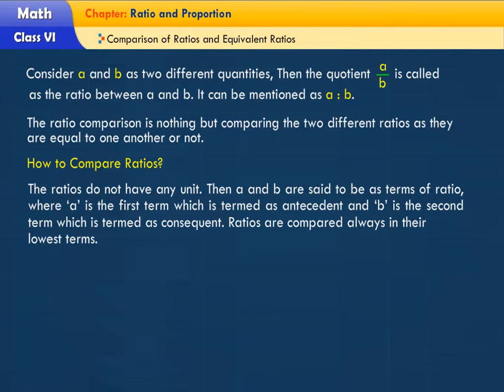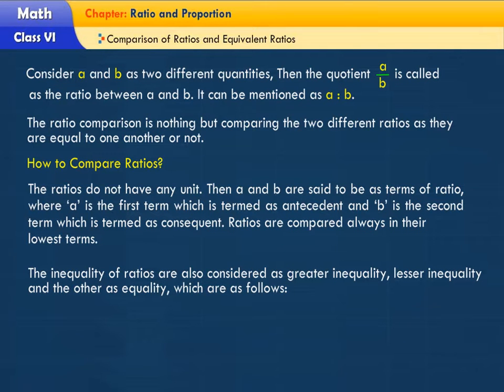Ratios are compared always in their lowest terms. The inequality of ratios are also considered as greater inequality, lesser inequality, and the other as equality, which are as follows.